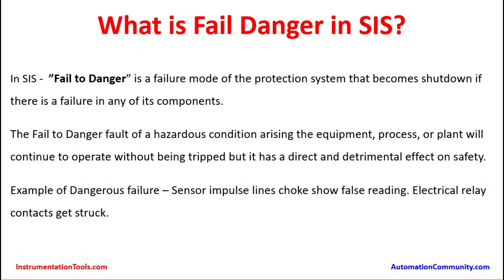What is fail danger in SIS? In SIS, fail to danger is a failure mode of the protection system where the system fails to shut down in the event of a failure in any of its components. In fail safe mode, failures on field instruments or valves can be identified through regular proof testing, visual inspection, or running diagnostics on smart instruments and isolated beforehand. Whereas in fail to danger, the failure is a blind one — it cannot be determined. It is an unknown failure, which is why it is known as fail to danger.